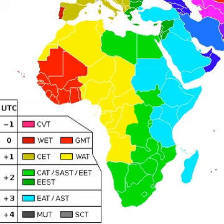Arabia Standard Time: an equivalent time zone covering Bahrain, Iraq, Kuwait, Qatar, Saudi Arabia, and Yemen, also at UTC plus three.